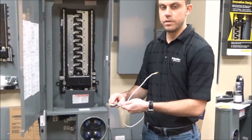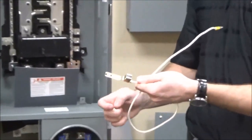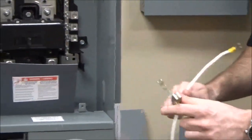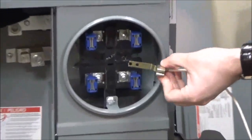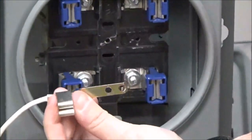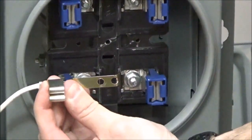With this kit, you receive the 5th Jaw assembly, the neutral wire, and the thread forming mounting screw. The 5th Jaw gets installed on the meter base in either the 3 o'clock, 6 o'clock, or 9 o'clock positions, depending on your utility requirements.